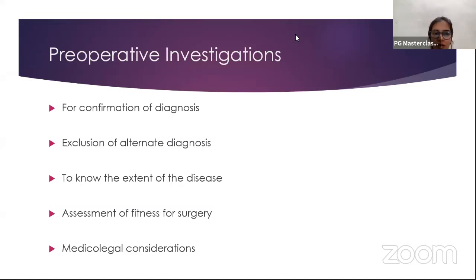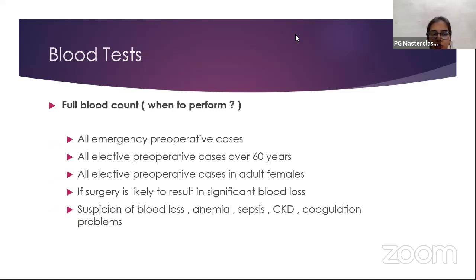After history and examination, preoperative investigations are done for confirmation of diagnosis, exclusion of alternative diagnoses, to know the extent of disease, for assessment of fitness for surgery, and for medico-legal considerations. The first and most commonly done test is a complete blood count (CBC), which is required in almost all procedures — all emergency preoperative cases, all elective preoperative cases over 60 years, all adult females, and when surgery is likely to result in significant blood loss, or when there is suspicion of anemia, sepsis, chronic kidney disease, or coagulation problems. For minor procedures like excision of sebaceous cysts or lipomas done under local anesthesia, a CBC may not be needed in a healthy patient under 55 years of age.